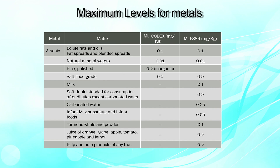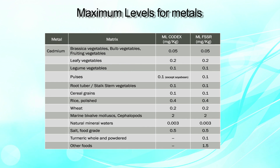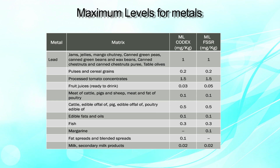The following slides show the MRLs for these heavy metals, benchmarking the Codex MRL with respect to the MRL prescribed by FSSR. Arsenic in milk is about 0.1 ppm, in soft drinks about 0.5 ppm, and in pulp and pulp products of any fruit about 0.2 ppm. Cadmium in fruiting vegetables is as low as 0.05 ppm, whereas in natural mineral waters it is even lower at 0.003 ppm. Lead in pulses and cereal grains is around 0.2 ppm, whereas for fruit juices ready to drink, lead as per Codex is 0.03 ppm and as per FSSR it is 0.05 ppm.